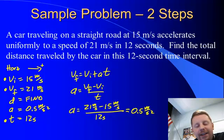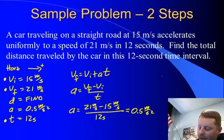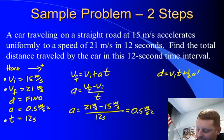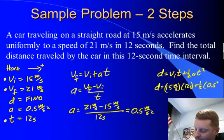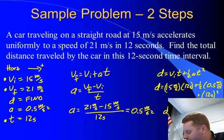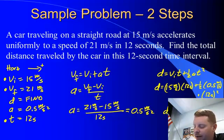Now we can solve for D with any of the equations we want to use. Let's use D equals VIT plus 1 half AT squared. We substitute in with units. VI is 15 meters per second, T is 12 seconds, plus 1 half times 0.5 meters per second squared, times T squared, 12 seconds squared, and when I do all that, plug it into my calculator, I come out with an answer of 216 meters for our displacement.